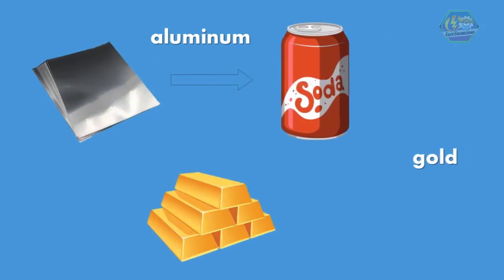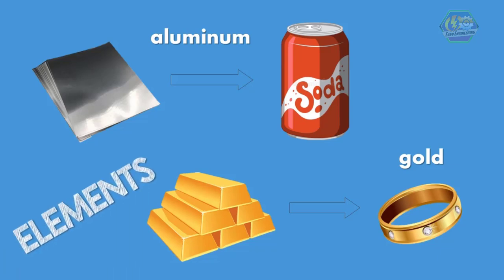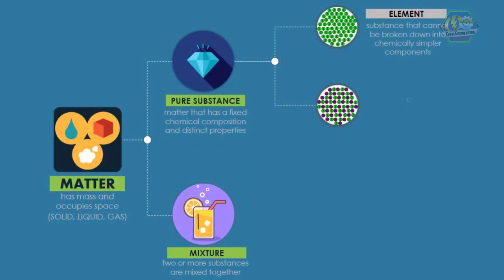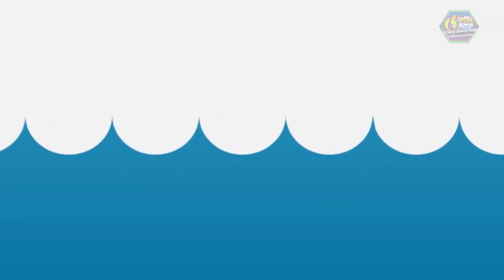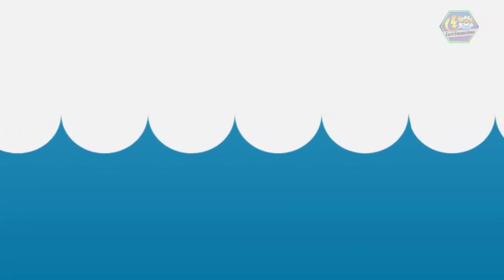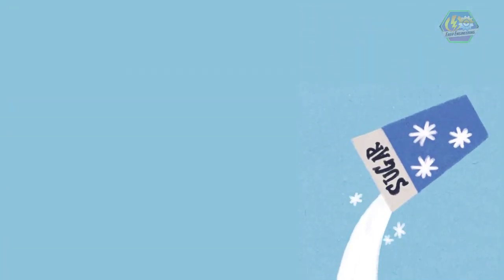On the other hand, a substance that can be broken down into chemically simpler components because it has more than one element is called a compound. For example, this is water—it is composed of elements hydrogen and oxygen. And sugar, which is composed of carbon, hydrogen, and oxygen.